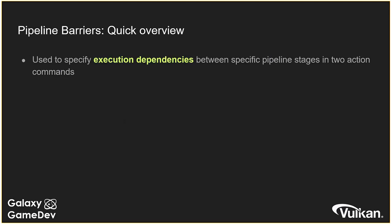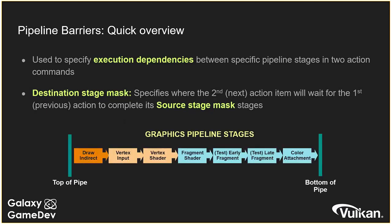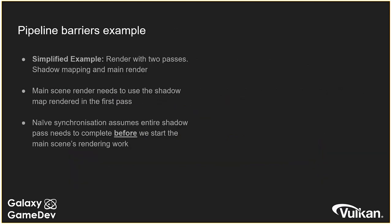Pipeline barriers are used to specify execution dependencies between two pieces of work. We do this with two masks: the destination stage mask specifies where a secondary piece of work will wait, and the source stage mask specifies when the dependency can be released. For graphics, the stages we care about include vertex, fragment shader, and color attachment output — these are the stages we use to control interactions between render passes.